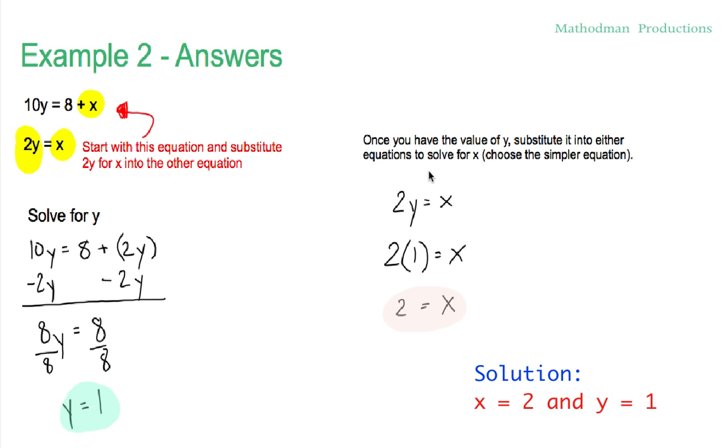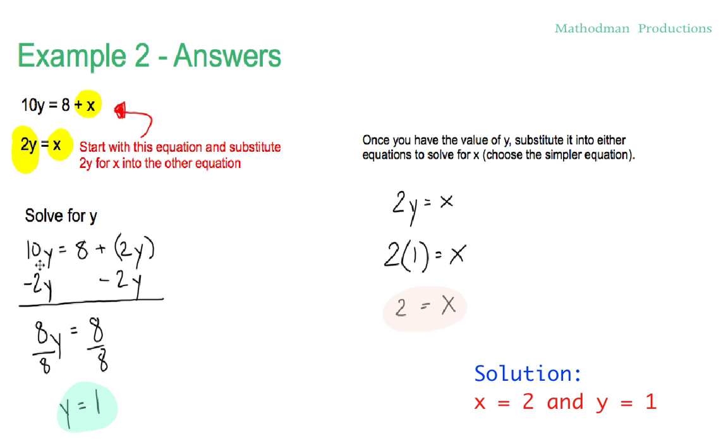Here is the answer for example 2. First start off with the easier equation. That's the one on the bottom. 2y equals x. And substitute it in to the other one. So you're going to substitute 2y for wherever you see an x in that top equation. That's what I did right here. And just solve for y. Pretty easy.